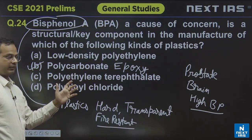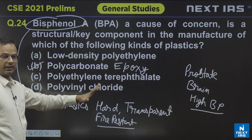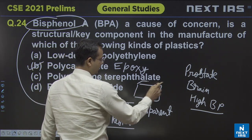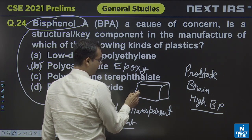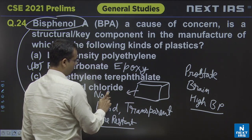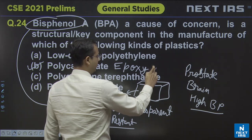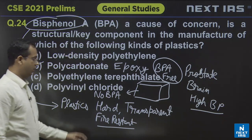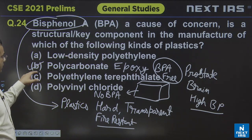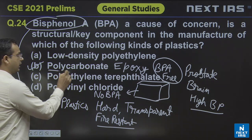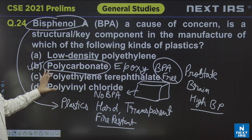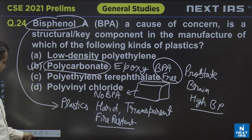In developed countries there are a lot of restrictions and regulations about BPA. Nowadays if you buy a food container or plastic tiffin box, most will have a 'No BPA' or 'BPA Free' rating, emphasizing that no BPA is present in the plastic. BPA is used for making polycarbonate, which is a hard type of plastic. So option B is the correct answer for question number 24.